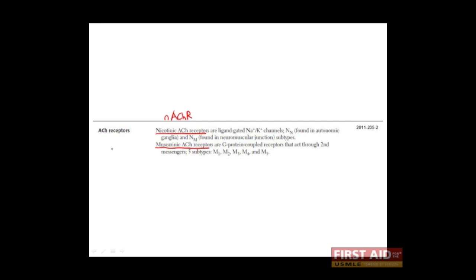Next let's talk about the acetylcholine receptors found throughout the nervous system. There are two types: the nicotinic acetylcholine receptor, abbreviated NACHR, and the muscarinic acetylcholine receptor, abbreviated MACHR — signified in the drawing as N or M respectively. There's a further division of the nicotinic acetylcholine receptors: the N subtype N, found on neurons in the autonomic ganglia, and N subtype M, found in the neuromuscular junction, where M stands for muscular. The most important thing to realize is the difference between the nicotinic and muscarinic acetylcholine receptors.